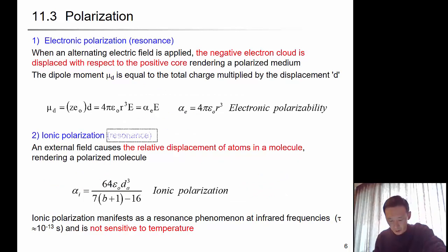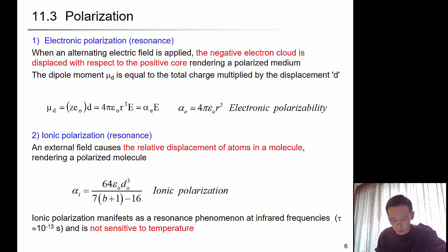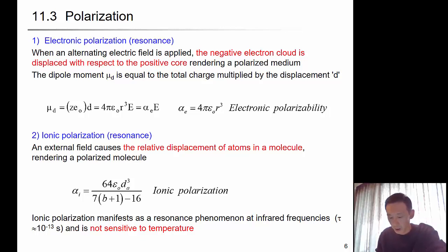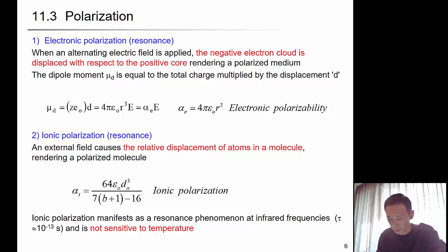To summarize: when an alternating electric field is applied, the negative electron cloud is displaced with respect to the positive core, rendering a polarized medium. The dipole moment is equal to the total charge multiplied by the displacement d. This is electronic polarization.